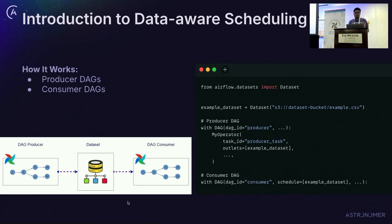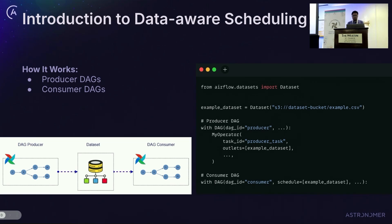In Airflow you have a list of producer DAGs which have tasks that produce or emit a dataset event. Whenever that dataset event is produced, your consumer DAG is triggered whenever there is an update to that particular data. In the producer DAG you can define outlets — in this example it's 'example_data'. Whenever this task executes completely it produces the example dataset. In the consumer DAG, the schedule is defined so that whenever this example dataset is updated, there will be a dataset event and the consumer DAG gets triggered.